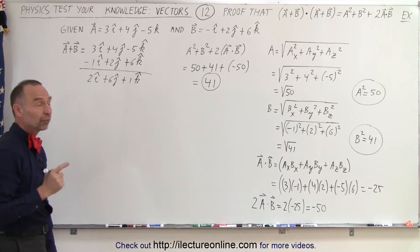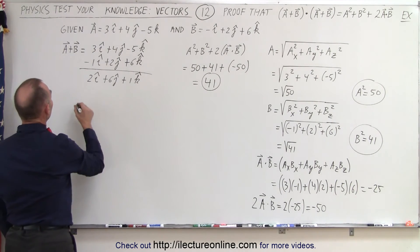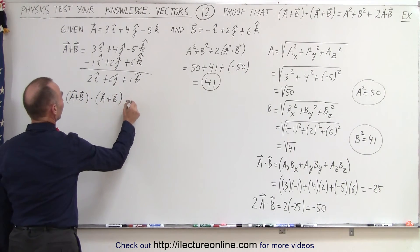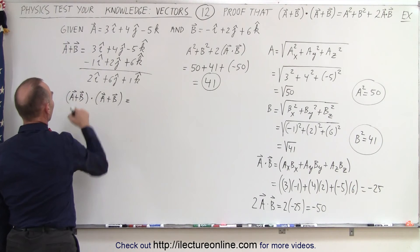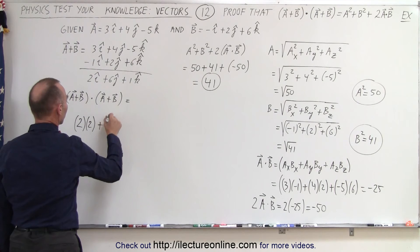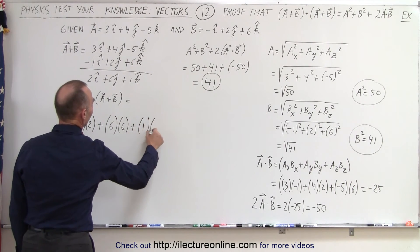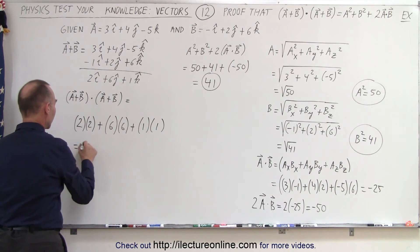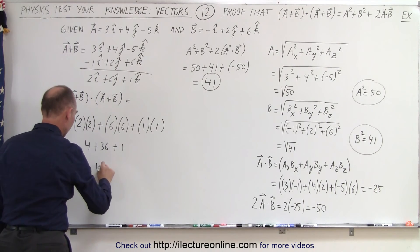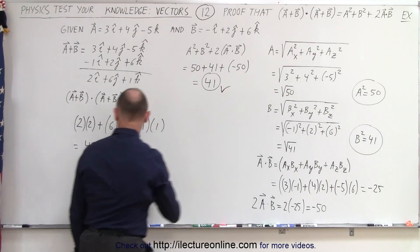So this is A plus B. If we now take the dot product of (A plus B) with itself, we multiply each component by itself: 2 times 2, plus 6 times 6, plus 1 times 1. That gives 4 plus 36 plus 1, which is 41. And sure enough, we get the exact same result, so the two match.